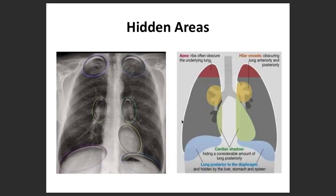In radiology, we refer to certain areas as hidden areas — regions that are not always clearly visible. These include the apex, where ribs can obscure the view, areas around the cardiac shadow which hide portions of the lung, and lung areas posterior to the diaphragm that are hidden by the liver, stomach, and spleen.